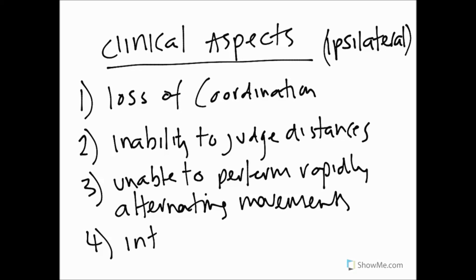Number four, we would expect an intention tremor. So this is a tremor when we carry out movement. Remember, this is in contrast to a resting tremor that's part of problems with the basal ganglia. So intention tremor for cerebellar problems and a resting tremor for basal ganglia problems. Let's move on to another screen so we can go to number five.